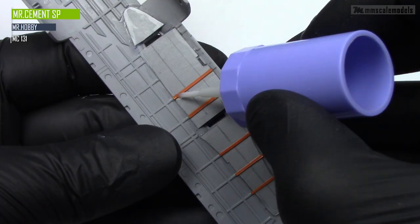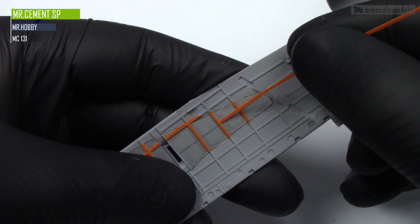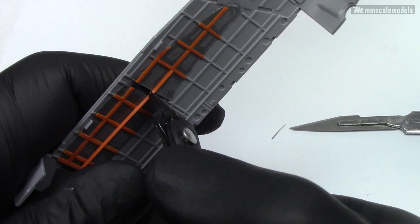Anyhow after some trimming and Mr. Cement SP application the ribs are all done. Now we can add stringer sections as I told you earlier. The pencil lines will do an awesome job being guidelines.